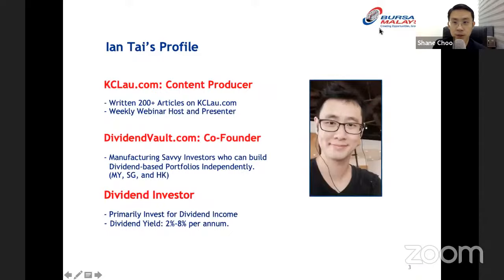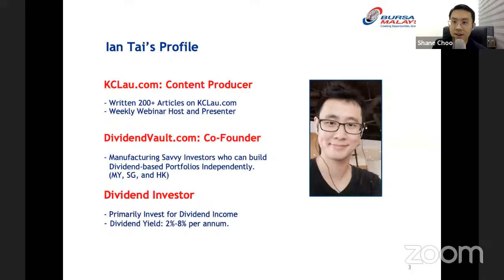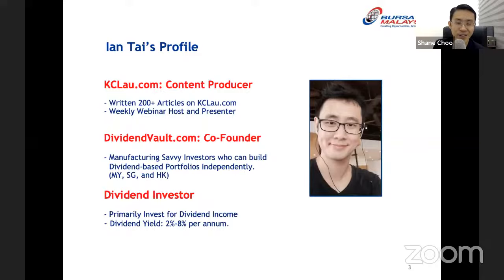Allow me to introduce our speaker today. He is a content producer of KCLab.com and has personally written over 200 articles there. He's also a weekly webinar host and presenter. Besides working for KCLab.com, he is also the co-founder of DividendVault.com, where he helps investors build dividend-based portfolios independently. He himself is a dividend investor, primarily investing for dividend income with an average yield of 2% to 8% per annum. He is also an author of three books. Today we are honored to have him here to talk about portfolio management — five steps to optimize the performance of your stock portfolio.